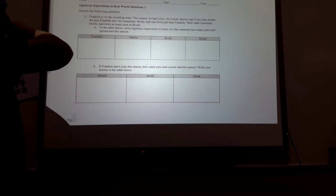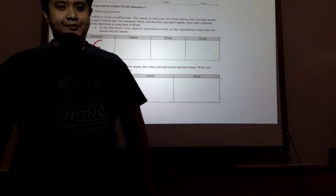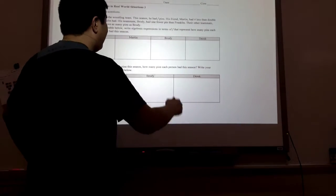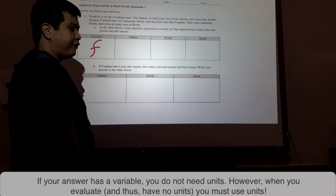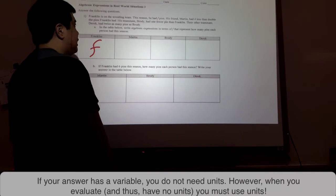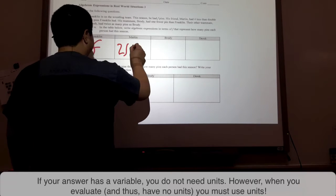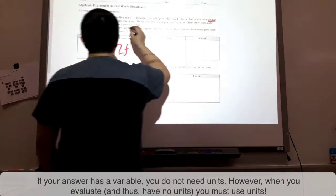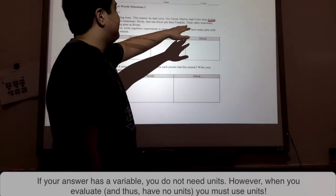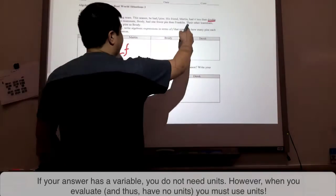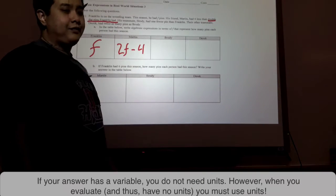So Franklin is on the wrestling team and this season he had F pins. Our answer for how many pins Franklin had is simply F as given in the question. Now his friend Martin had four less than double the pins Franklin had. Remember, anything that happens after the word THAN has to happen first in our algebraic expression in terms of order of operations. Double the pins Franklin had means multiplying by 2, so that's 2F. That has to happen first. Then what happens before the word THAN has to happen second, which is four less — so that is minus 4, giving us 2F minus 4.